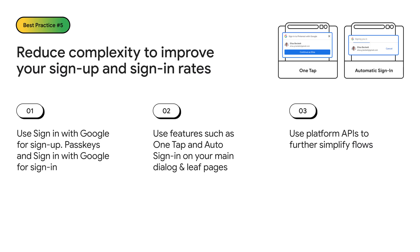Fifth, reduce the complexity for your users to improve sign-up and sign-in rates. According to feedback from partners, both Passkeys and sign-in with Google have been shown to improve sign-up and sign-in flow completion rates. Use sign-in with Google for sign-up, and both sign-in with Google and Passkeys for returning user sign-in. Features such as one-tap and automatic sign-in will help you improve your conversion rates. We recommend putting these features on both your main dialogue and leaf pages, allowing users to sign up and sign in in the context of your website without having to navigate away from their current journey.